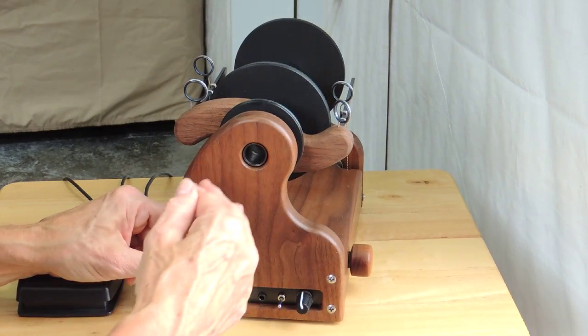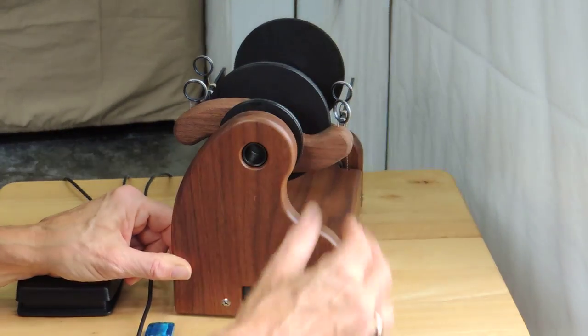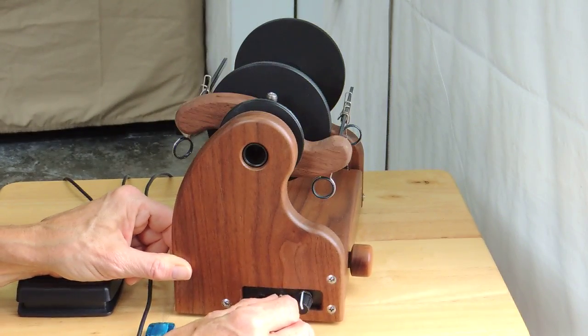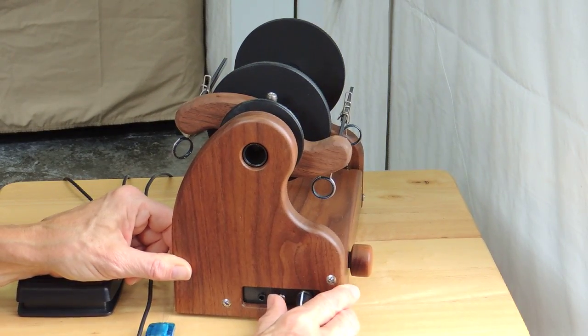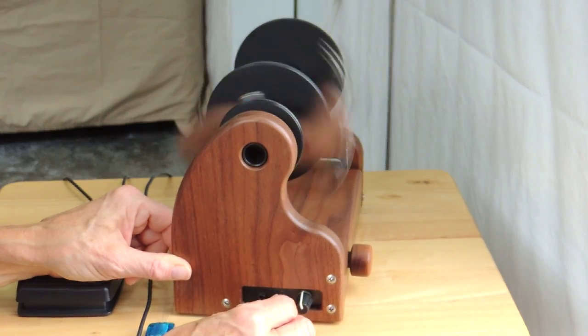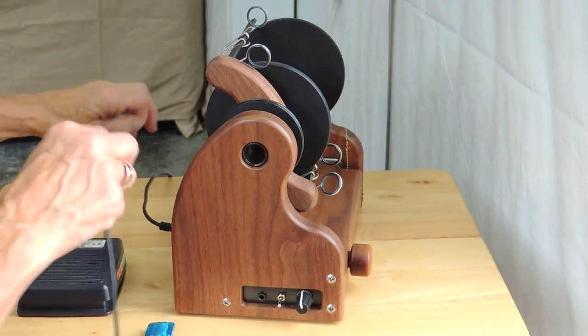Instead of the flyer ramping up gently it just goes straight to full speed and it stops instantly. So again when I turn it on it's full speed and when I turn it off it stops suddenly.